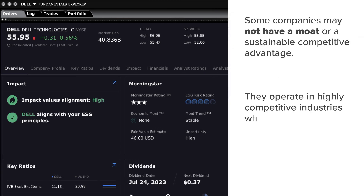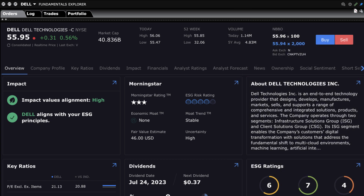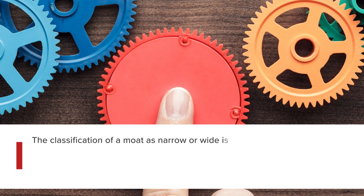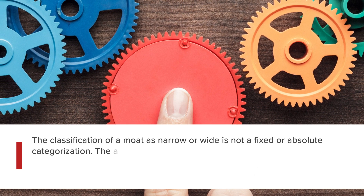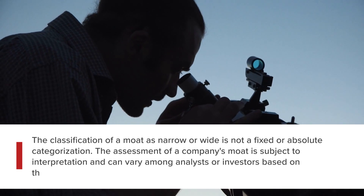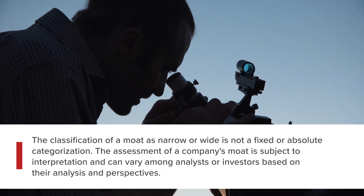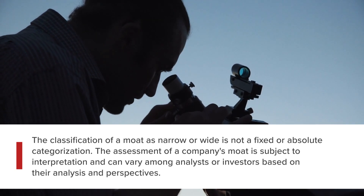And lastly, no moat. Some companies may not have a moat or a sustainable competitive advantage. They operate in highly competitive industries where it is relatively easy for new entrants to replicate their products or services, resulting in minimal barriers to entry. It's important to note that the classification of a moat as narrow or wide is not a fixed or absolute categorization. The assessment of a company's moat is subject to interpretation and can vary among analysts or investors based on their analysis and perspectives.